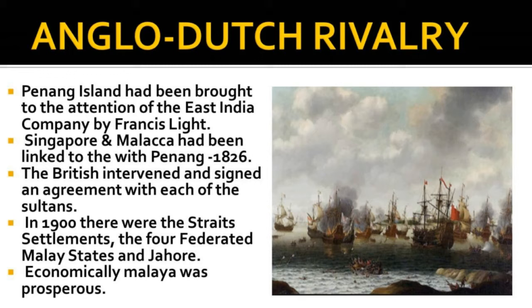By 1826, Singapore and Malacca had been linked with Penang to form the Strait Settlements. Between 1874 and 1895, there was a civil war between the remaining five Malay states. The British intervened and signed an agreement with each of the Sultans. In 1900, there were the Strait Settlements, the four federated Malay states, and Jahud. Economically, Malaya was prosperous.